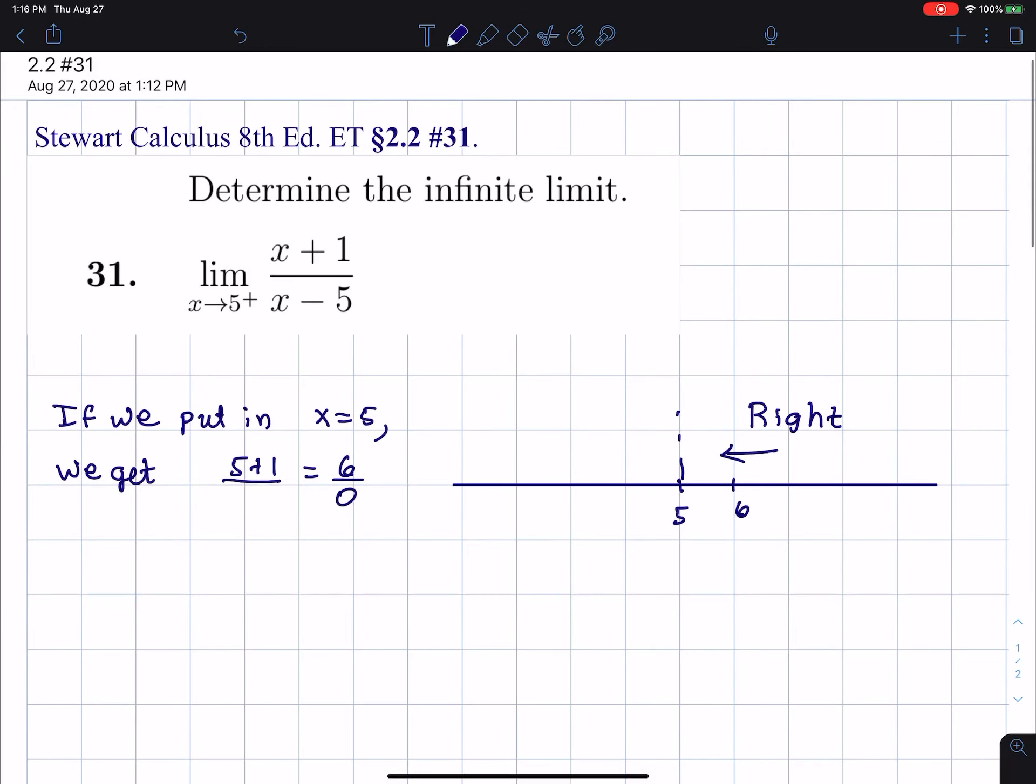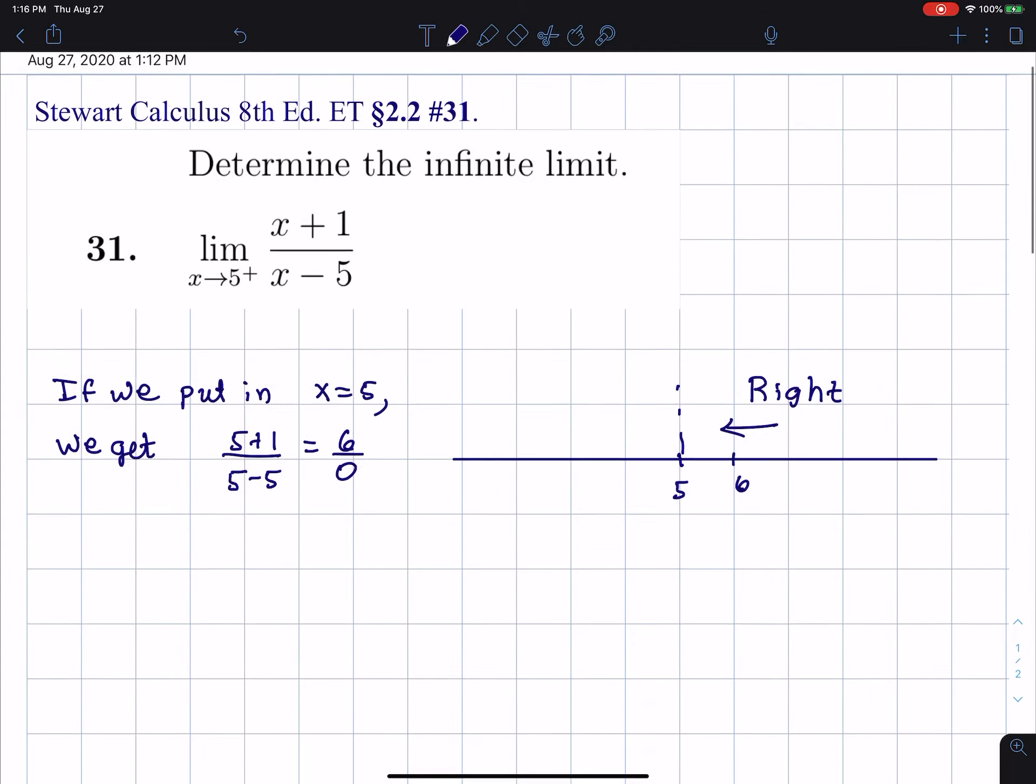But also, there's more to it. When you have, after plugging in the number x is approaching, when you have 0 in the denominator and a non-zero number in the numerator, that's when we start looking for an infinite limit. And the infinite limits, if we sketch the graph, correspond to a vertical asymptote.